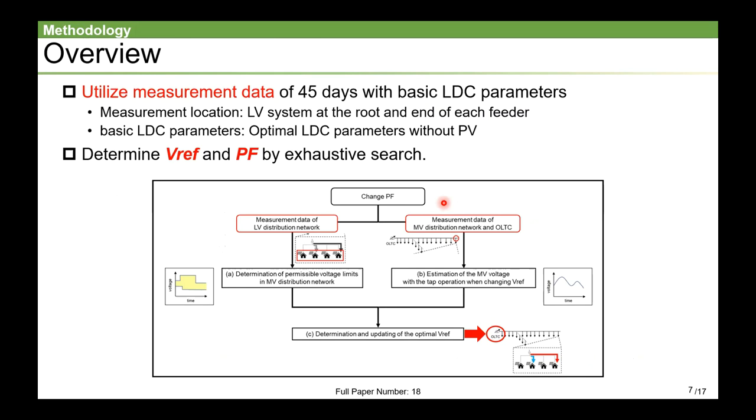The proposed method is described from here. This method utilizes voltage measurement of 45 days when OLTC is operated with the basic parameter, and the power factor is changed to some value after PV penetration. Here, the basic parameter is the optimal parameter when PV is not deployed. In addition, we choose every customer at the root end of each feeder as the measurement locations. Look at this figure. The proposal method consists of three main steps.